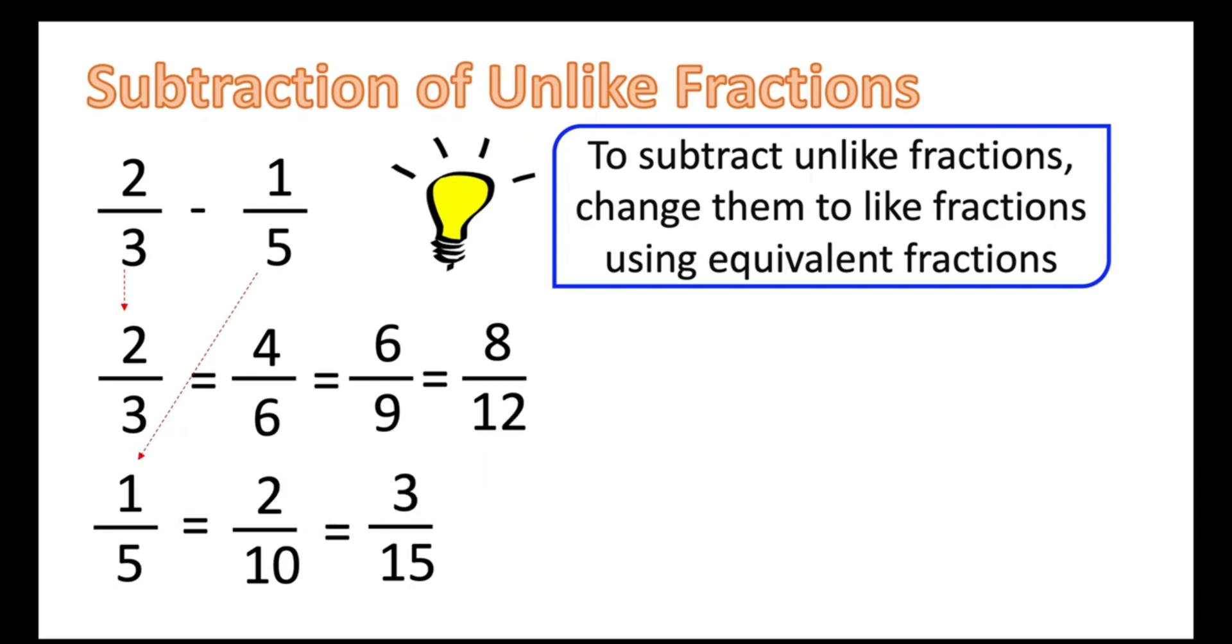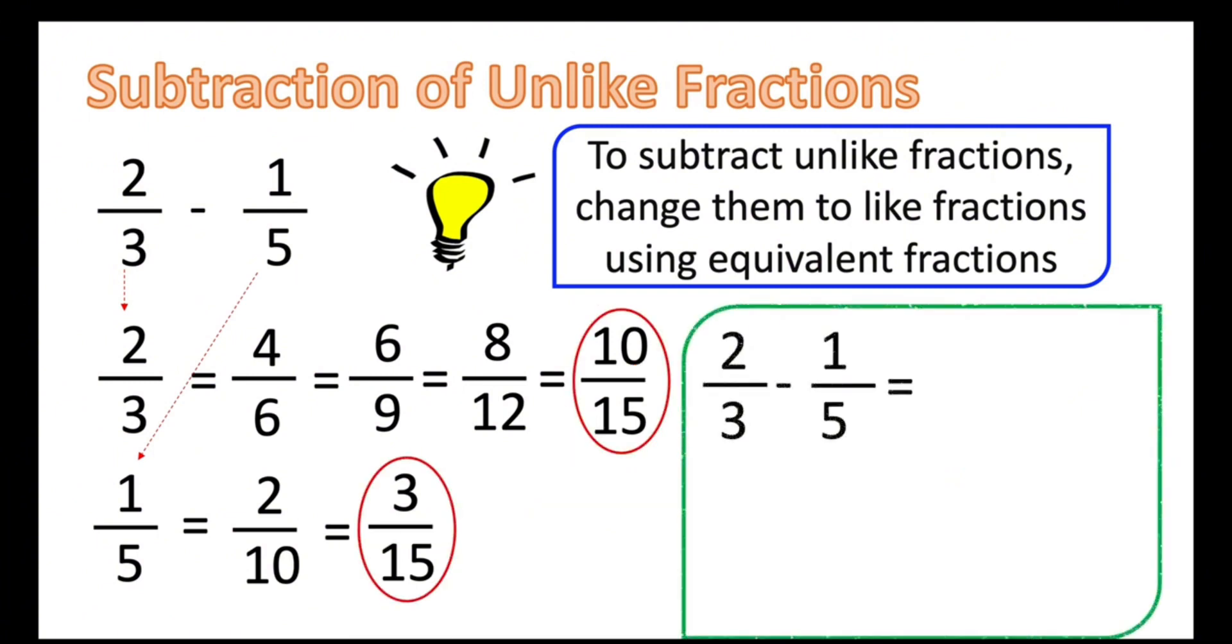In which we can get the same equal denominator with our given below, 15. So 2 thirds is also equal to 10 fifteenths. We now able to get our common denominator, which is 15. 2 thirds minus 1 fifth is also equal to 10 fifteenths minus 3 fifteenths. So 10 minus 3 equals 7. Then let's write our denominator. So the answer is 7 over 15.